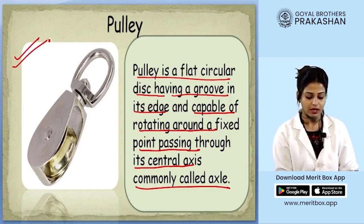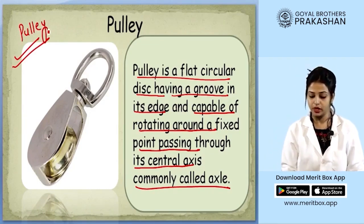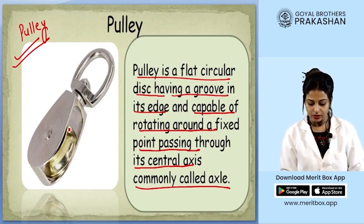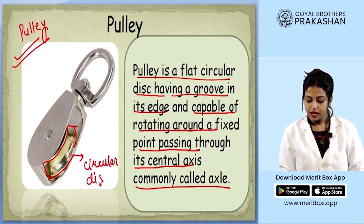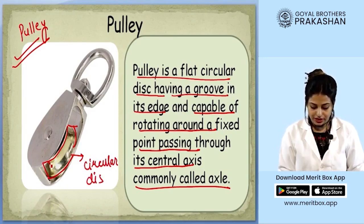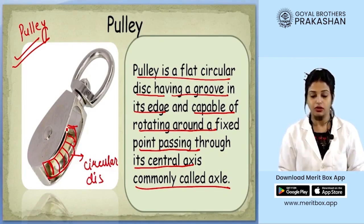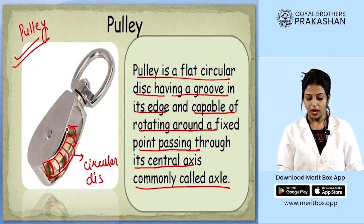Here you can see an image of a pulley. Going by the definition, a pulley is a circular disc — this circular disc I am outlining is the flat circular disc we are talking about in the definition. You can see there is a groove on the inward edge of that circular disc. This is how we get our pulley, by making a groove in the circular disc.